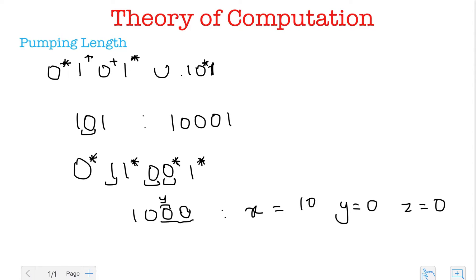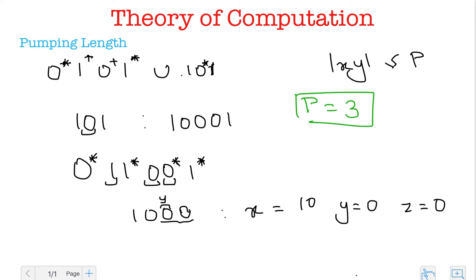The third condition says the length of x and y together must be less than or equal to the pumping length. With p=3, x and y together have length three, which satisfies the condition. The length of y is greater than zero — that's fine too. I can pump y as many times as I want, and given any string from the first part I'll be able to find a y satisfying all pumping lemma conditions. So the answer for this example is p=3.